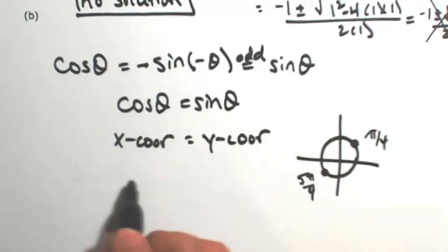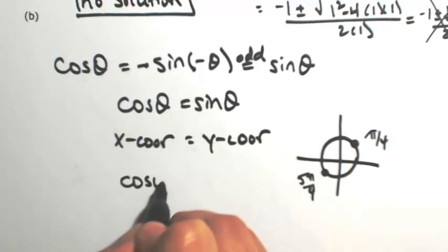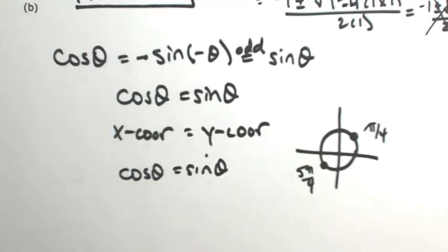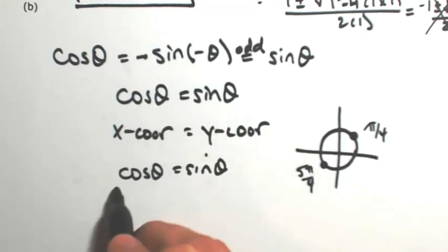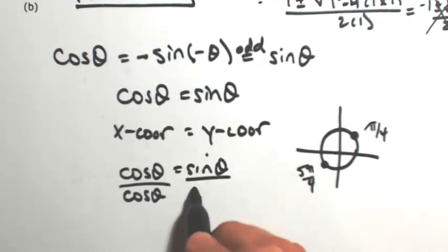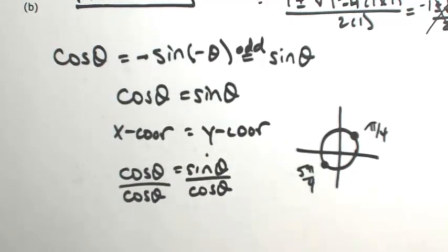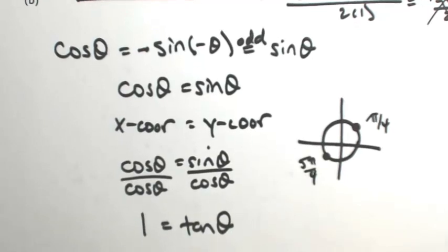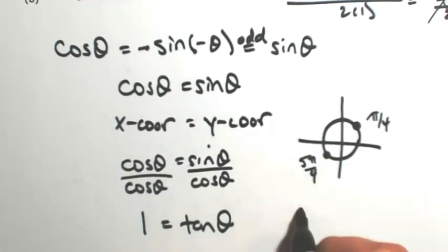That's one way to think about it. Another way you could have thought about this is because the cosine of theta equals the sine of theta, if I divide both sides by the cosine of theta, once cosine of theta is not zero, then we end up with one equaling the tangent of theta, which gives you the same answers at π/4 and 5π/4.